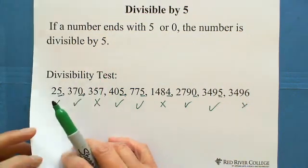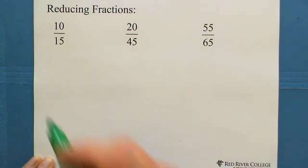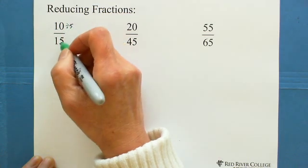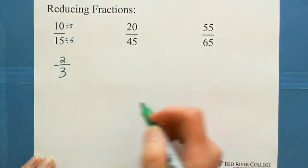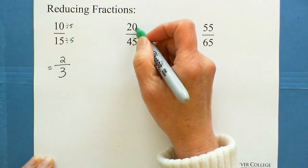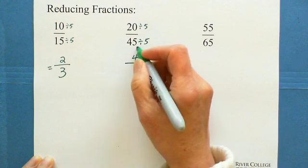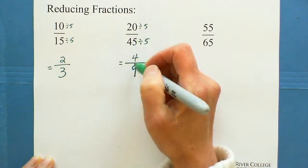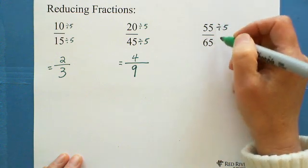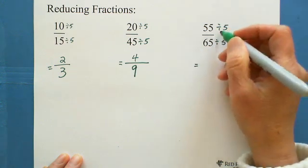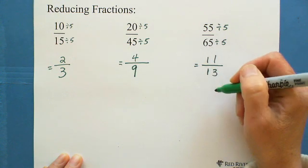Let's see the application of divisibility by 5 to reduce fractions. 10 over 15 — 10 ends with 0, divisible by 5; 15 ends with 5, divisible by 5. 10 ÷ 5 = 2 and 15 ÷ 5 = 3, so 10/15 = 2/3. Next, 20 over 45 — both divisible by 5. 20 ÷ 5 = 4 and 45 ÷ 5 = 9, so the reduced fraction is 4 over 9. And 55 over 65 — both end with 5, divisible by 5. 55 ÷ 5 = 11 and 65 ÷ 5 = 13, so the answer is 11 over 13.